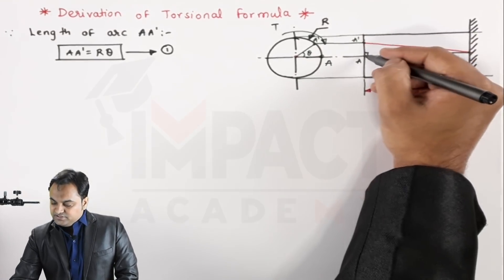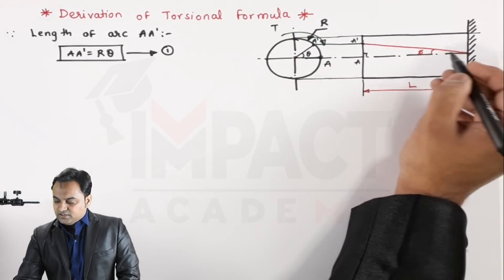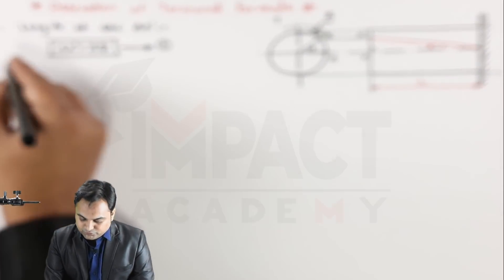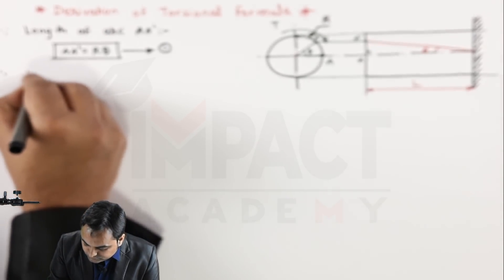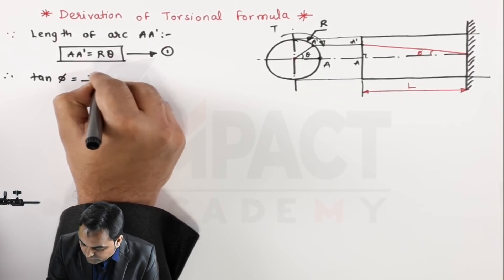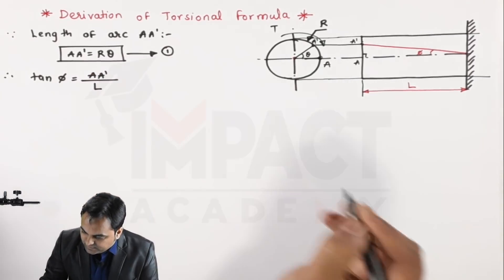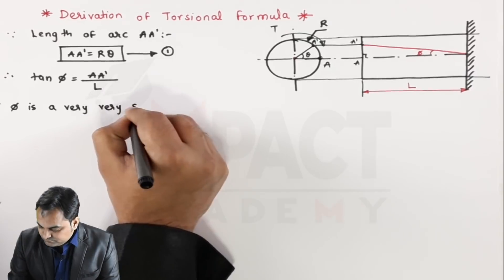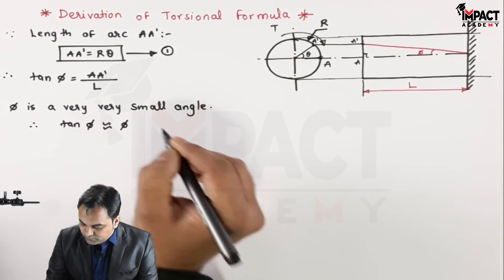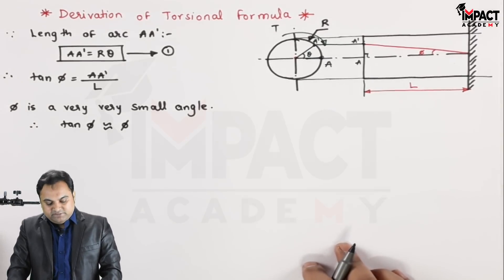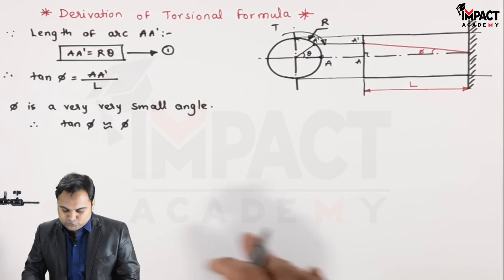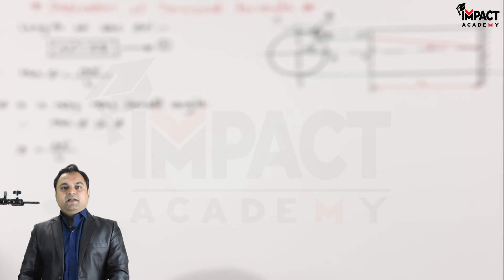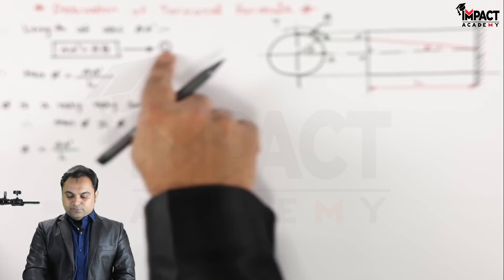Looking at the side view, where I can see the length of the shaft, the distance A–A dash can be found using trigonometry. tan(phi) equals opposite side over adjacent side, so tan(phi) = A–A dash / L. Since phi is a very small angle, tan(phi) can be approximated as phi, giving phi = A–A dash / L. Substituting A–A dash = R·theta from equation 1, we get phi = R·theta / L.